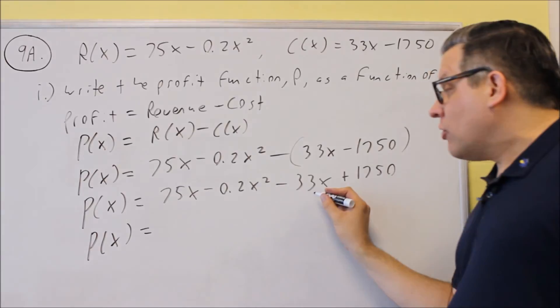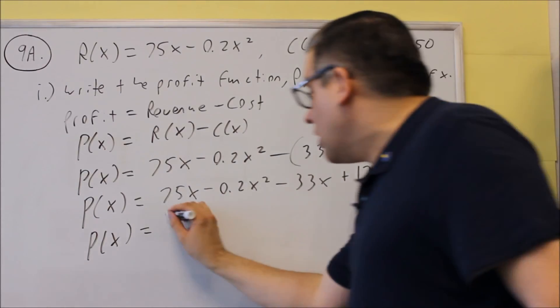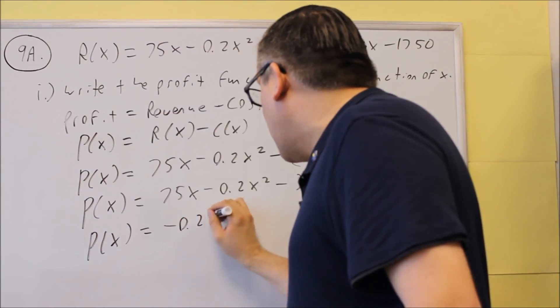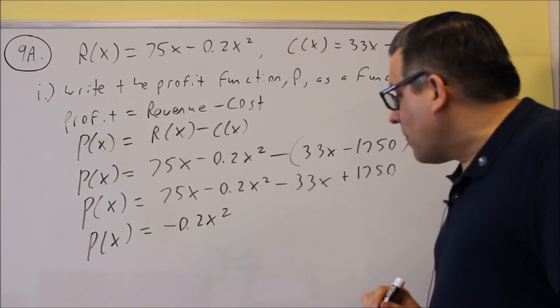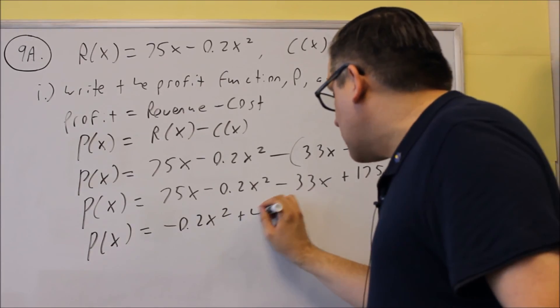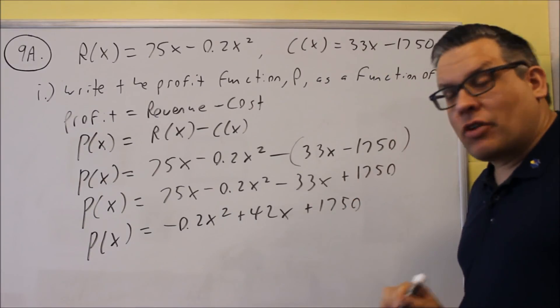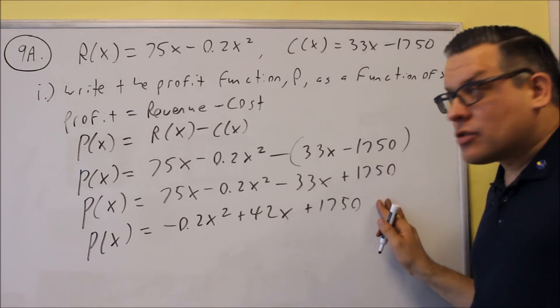So 75 minus 33, we get 42x. Let's actually start with the highest power: negative 0.2x² plus 42x plus 1750. I've simplified it down, and so this formula right here would be the answer for the first part, part i.